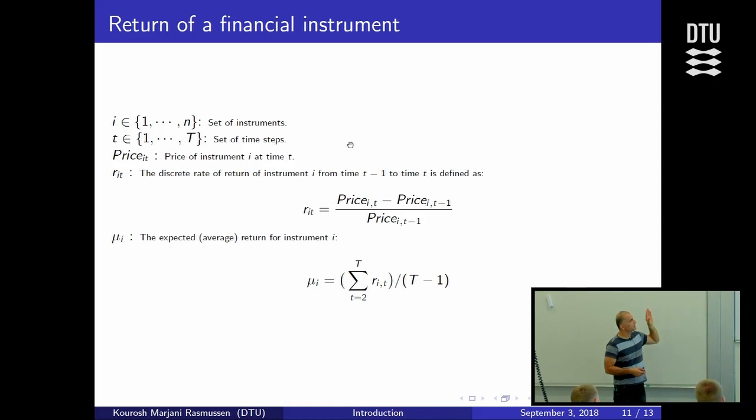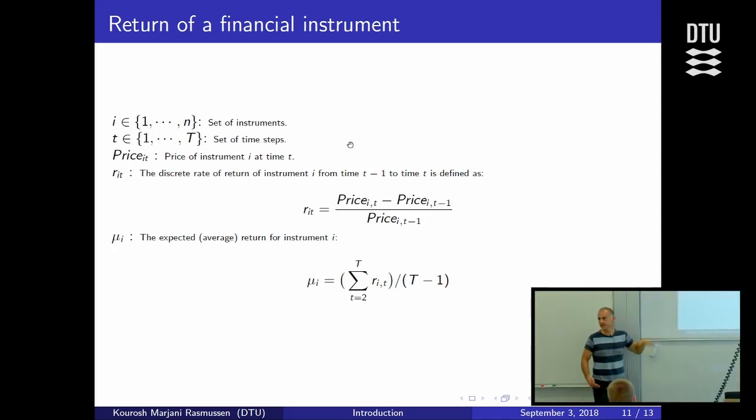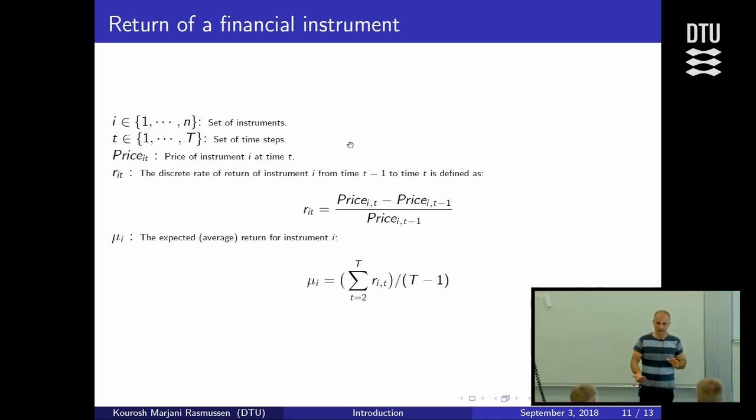And then we have a time series, time steps, for which we have prices for these instruments. So the only thing we have is historical prices of these financial instruments. And the way we calculate return is that we say the price today, minus the price yesterday, divided by the price yesterday. This is the return calculated in discrete time steps.